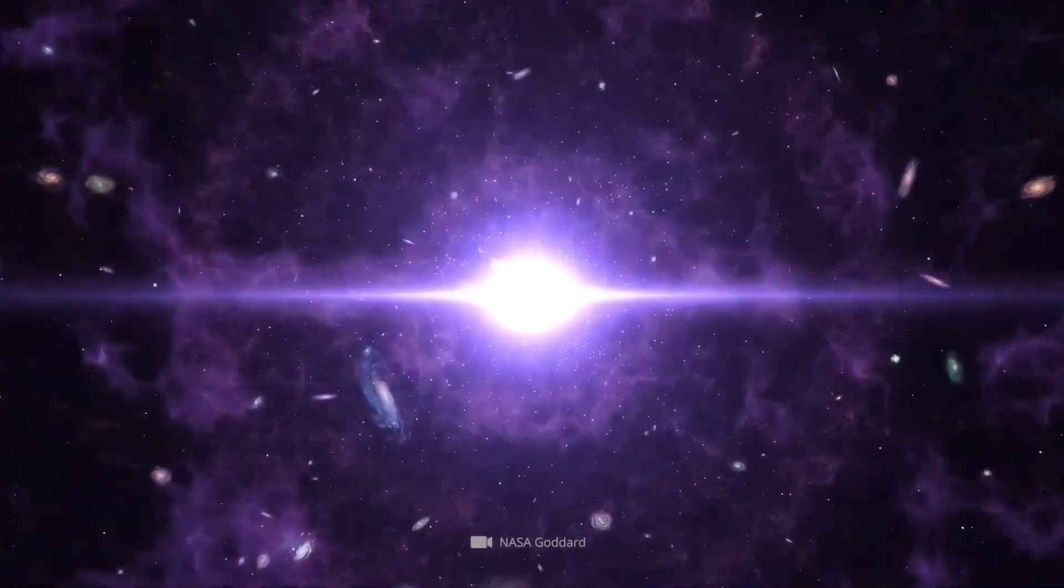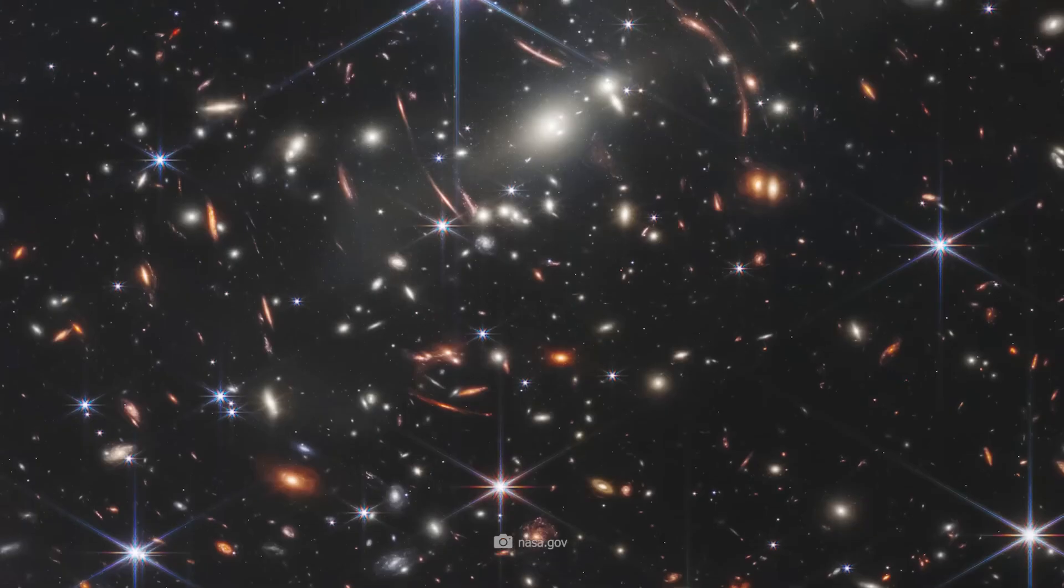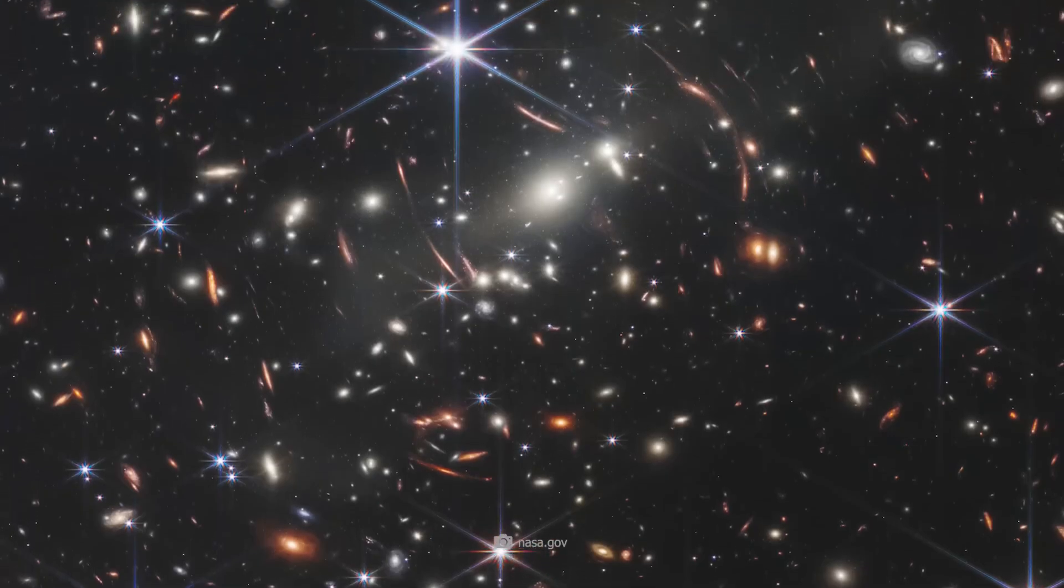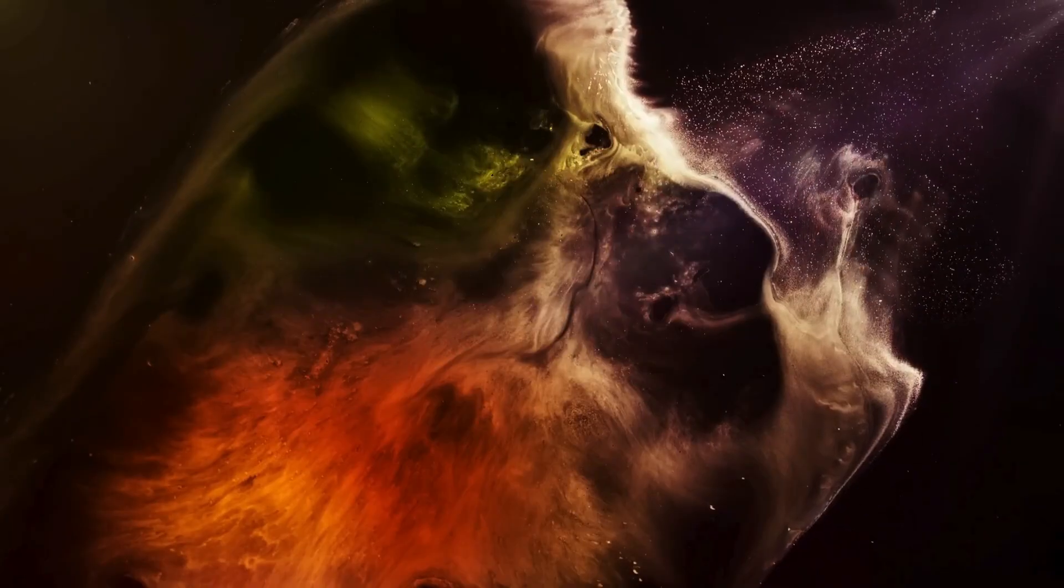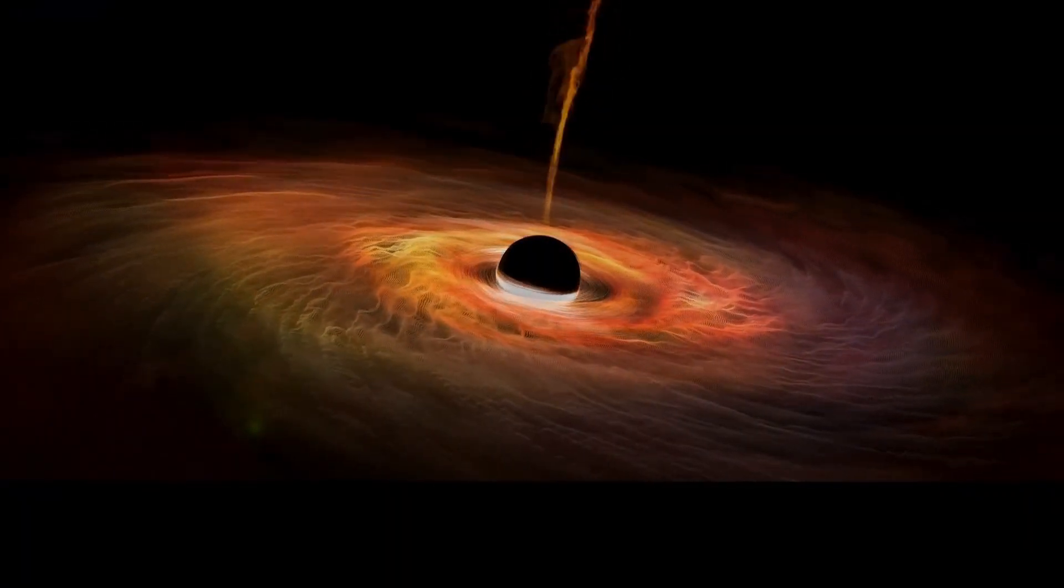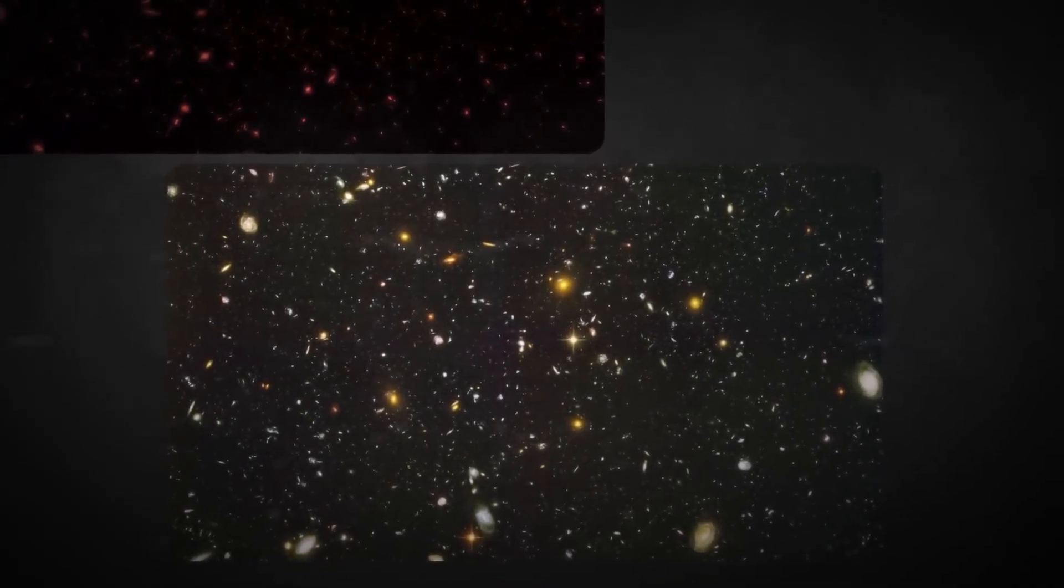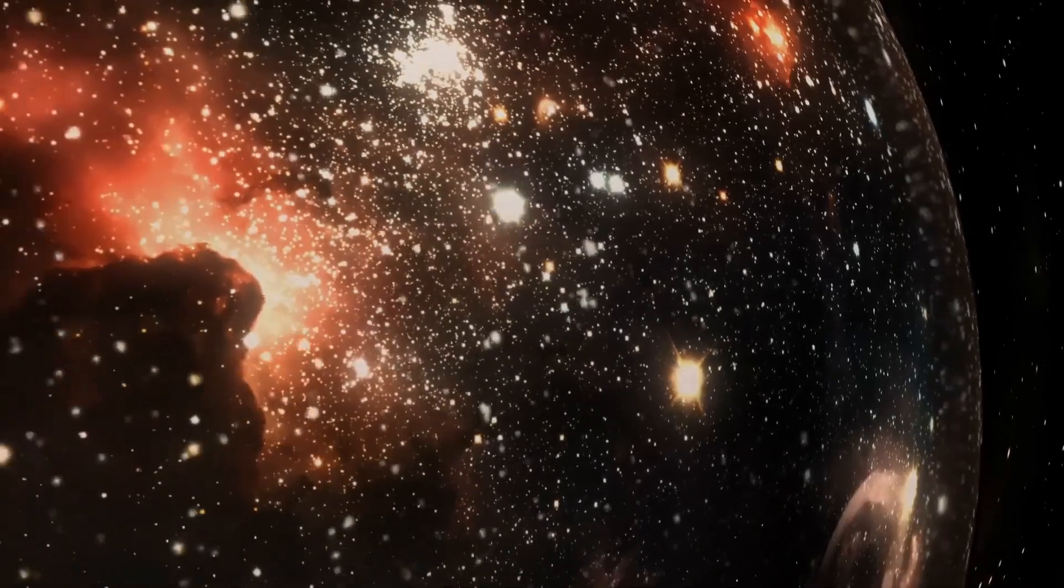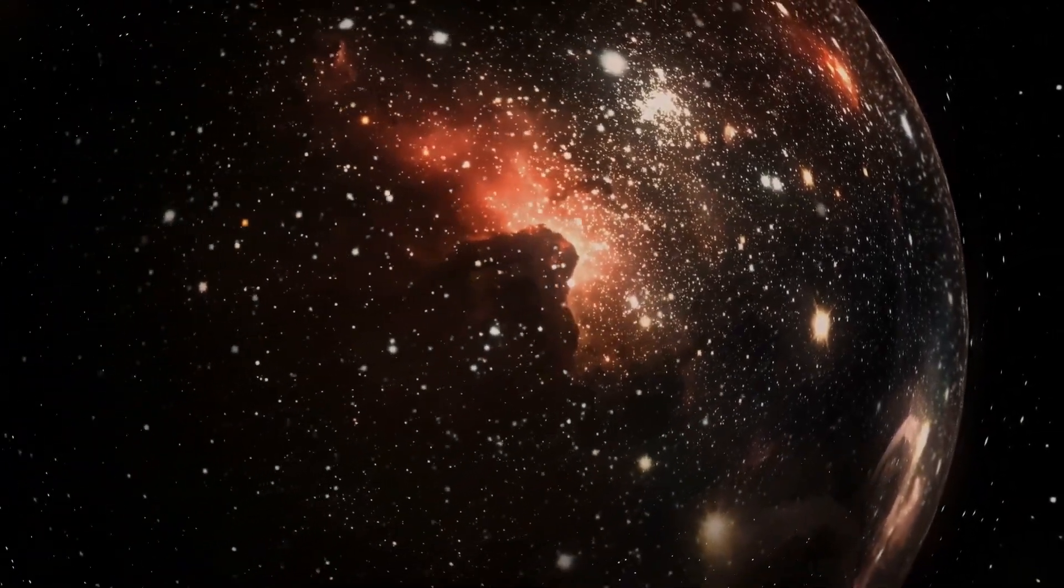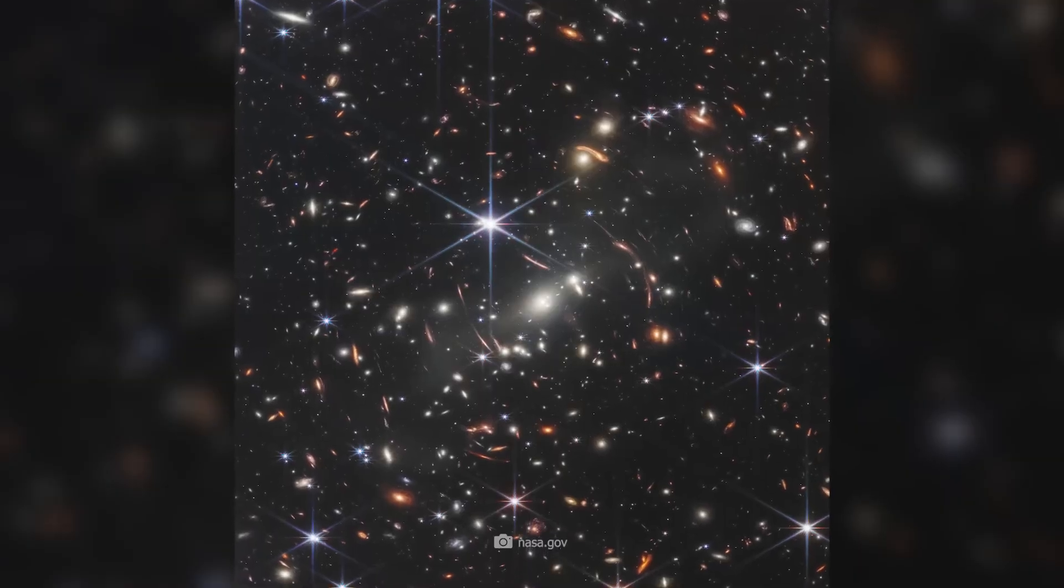The concept of the edge of the universe is a mind-boggling topic that has fascinated scientists, philosophers, and thinkers for ages. We have all sorts of theories about what lies beyond, but the truth remains elusive. However, there are three theories that stand out. The first theory is that the universe goes on forever, with no end in sight. This theory is based on the cosmological principle, which states that the universe is isotropic, meaning that it looks roughly the same in every direction. If this principle holds true, it implies that the universe stretches on endlessly without a boundary.